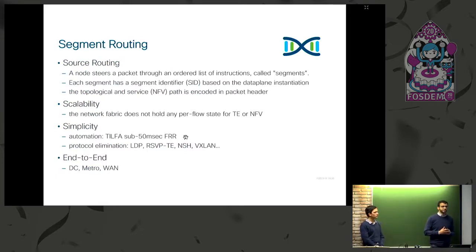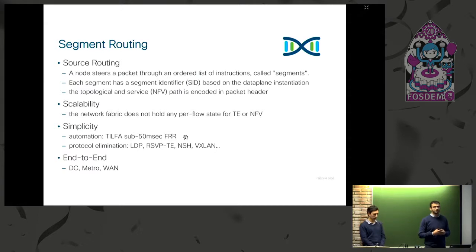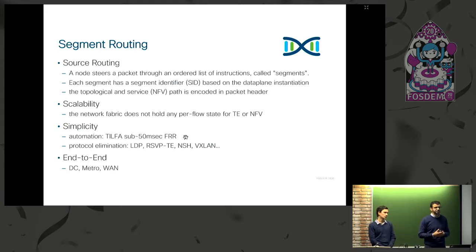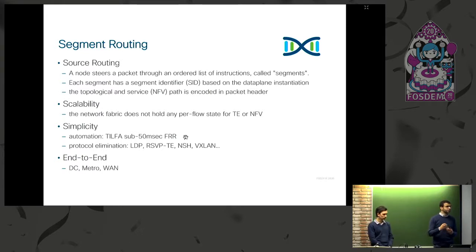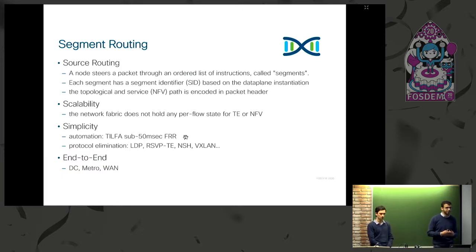So what is SRV6? SRV6 is a source routing mechanism where you define the forwarding path of the packet at the source. You attach to the packet a list of instructions or endpoints that need to process the packet — these are called segments or SRV6 segments. Each segment has a segment ID. Segments can have two meanings: a topological meaning, like going through specific nodes, or a service/NFV meaning, like going through specific network functions before reaching the destination.